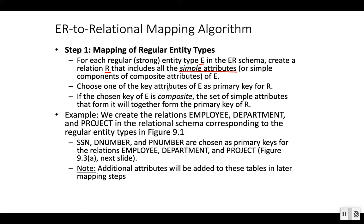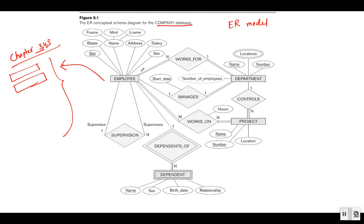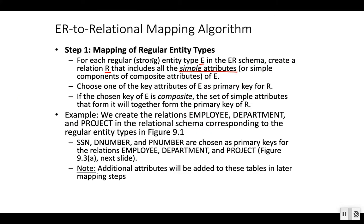Each entity can have one or multiple key attributes. However, in a relational schema every relation can have only one primary key. So if we have multiple key attributes we choose only one of them as the primary key — we can choose any one. If the chosen key is composite, then the set of its simple attributes together will form the primary key.